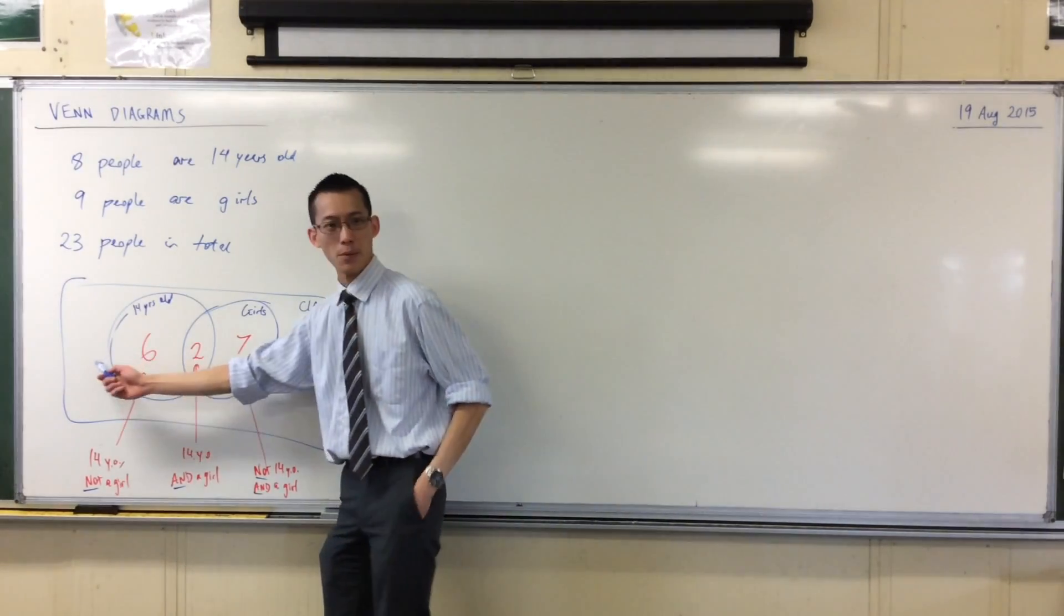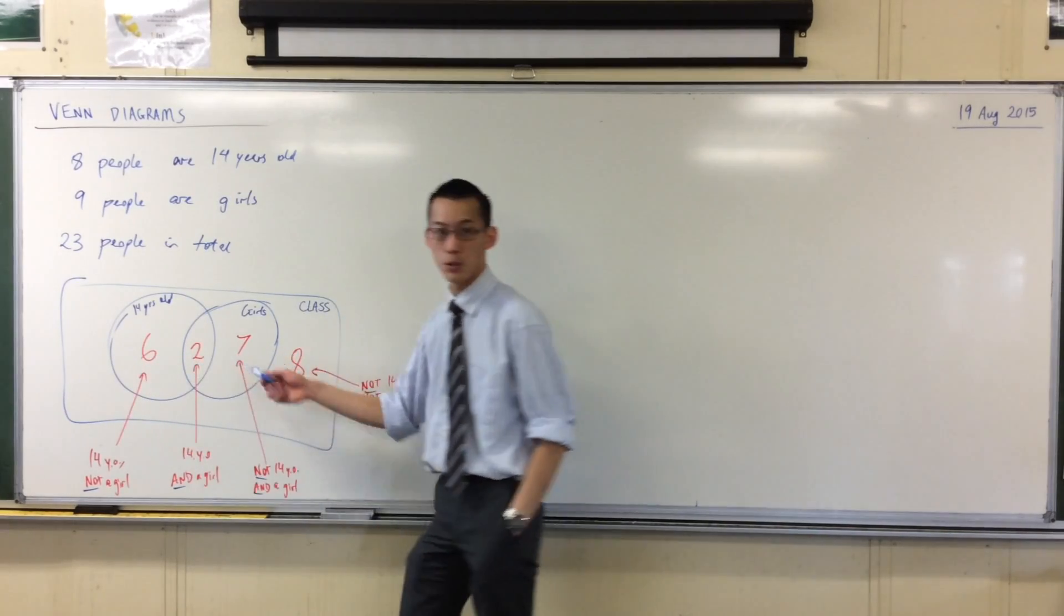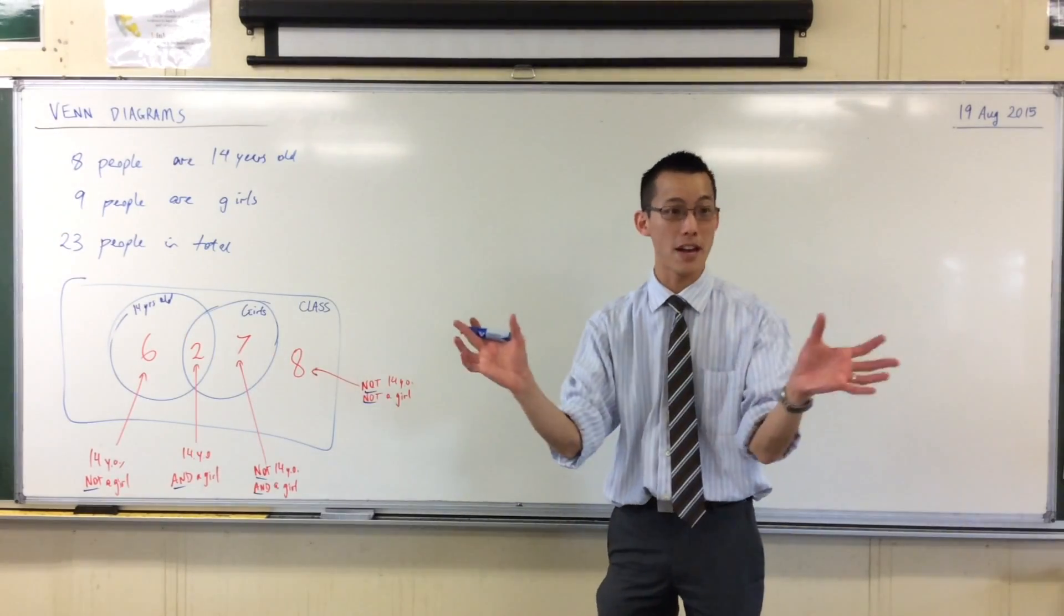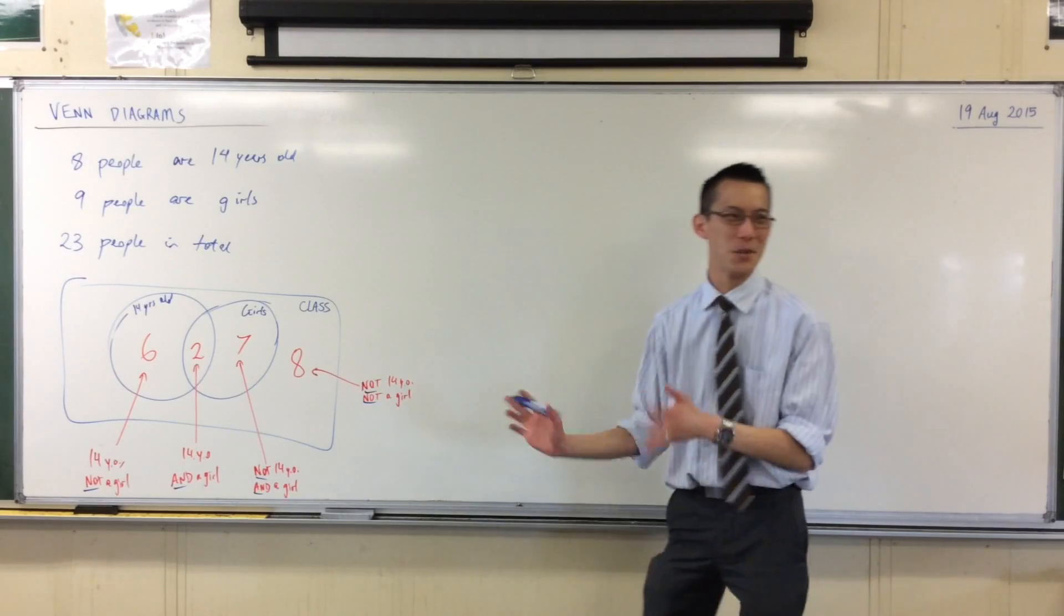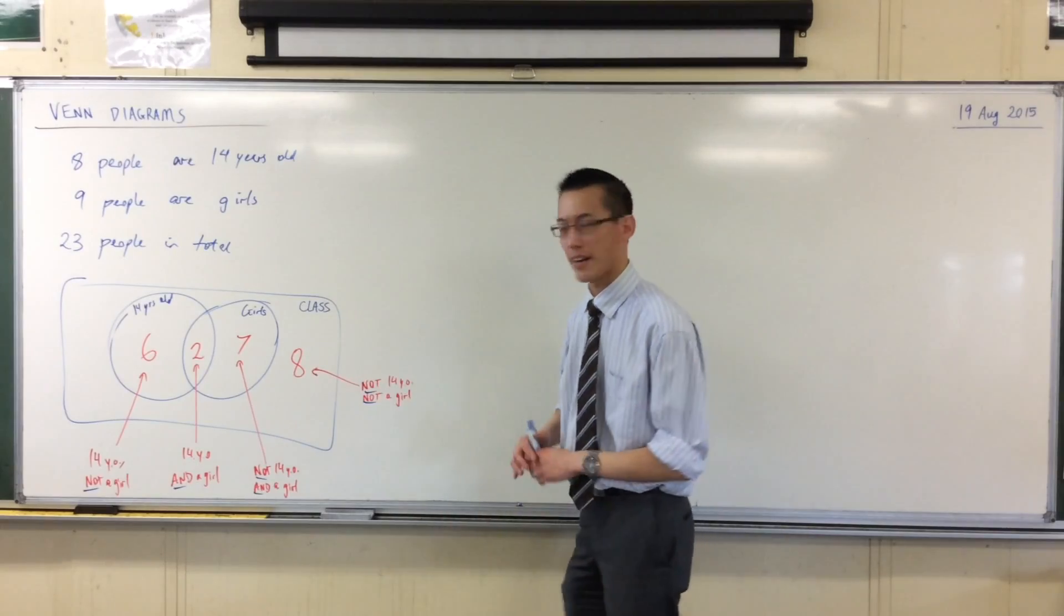Because that means you're meeting one condition but not the other, or in the same way here. So how many people are 14 years old or a girl in total? Looks like it's all 15 of these people here, right? Does that make sense? Because if I ask any of these groups, are you 14 or a girl, they should say yes because they'll be one or the other. Only these guys outside, literally the guys outside, don't meet those conditions. All right, so this is a Venn diagram.